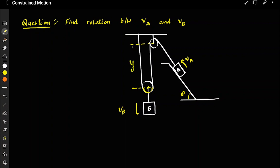The velocity of B is the same as the velocity of the center of this pulley. I mark this length as y, this length also as y, and I mark this length as x. So I write the total string length as 2y plus all constants plus x, since there is again a single string and the two y segments come from the movable pulley.